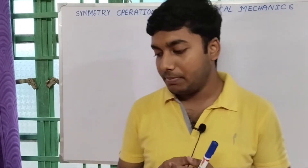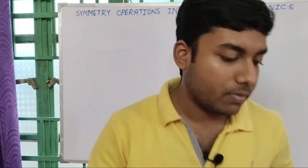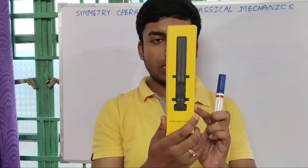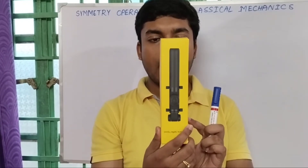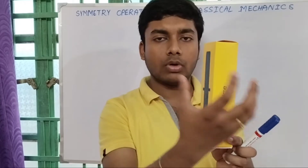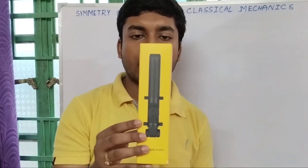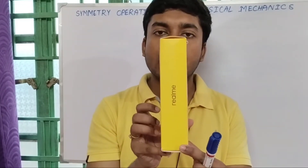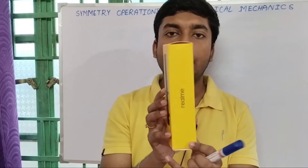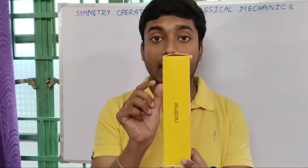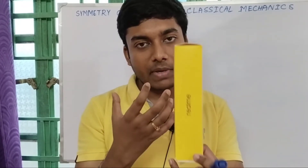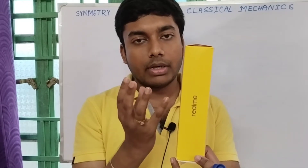What is meant by continuous symmetry? Let us discuss with this box. If I rotate this box 90 degrees — think that the total box is yellow color — the initial state of the box is like this, and if I rotate it 90 degrees, as the cross section is square, it will appear just the same as the initial state. That means after rotating a finite amount of angle pi by 2, it is just coming back to its initial state — so it is symmetric after rotating pi by 2.